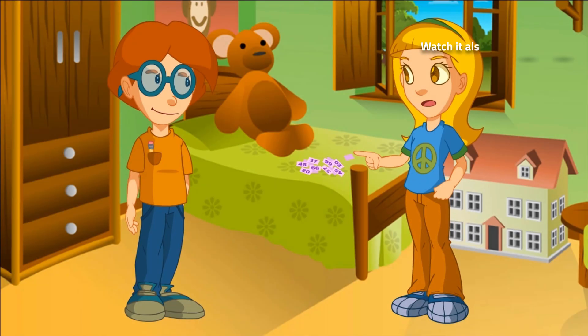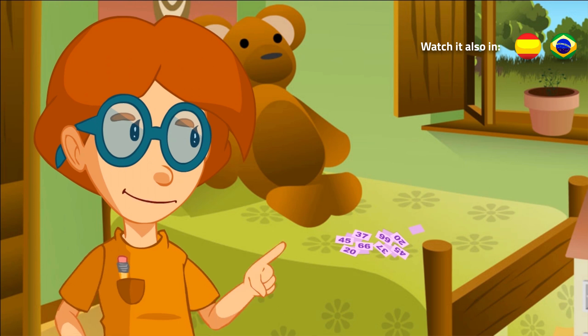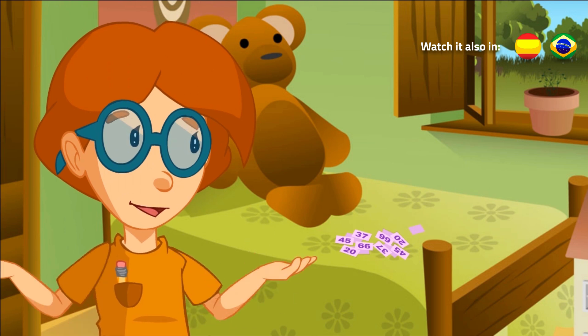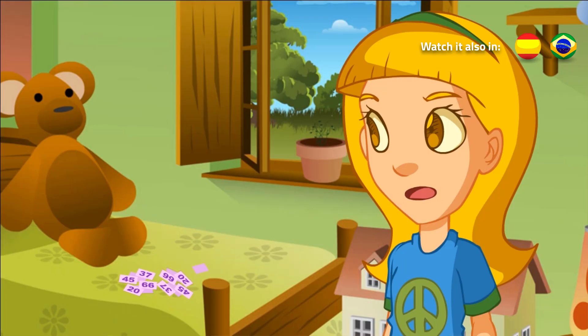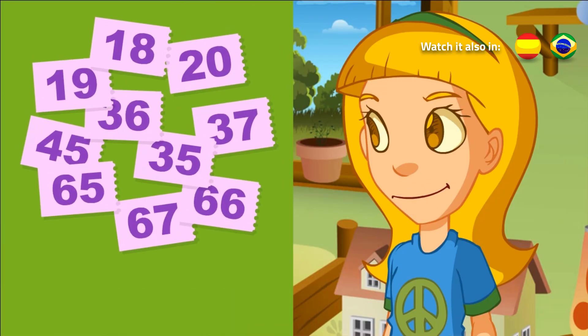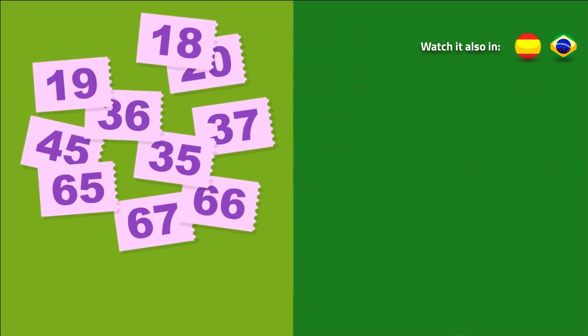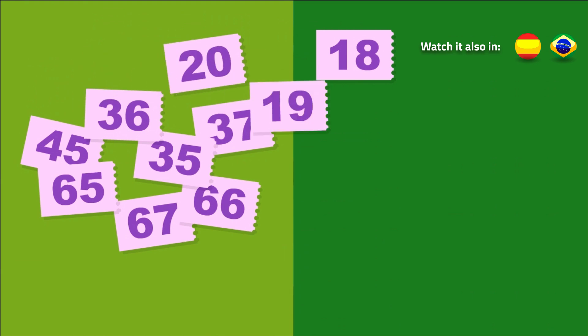Here are all the raffle numbers. Okay, you've got very similar numbers. Why don't you put them in order starting by the first number? I'll take the numbers starting with 10 and I'll put them in order. First, I put 18 and the number after is 19.